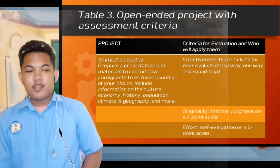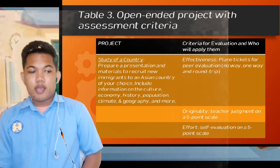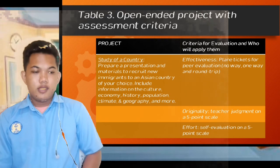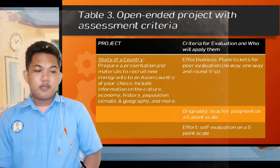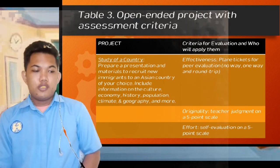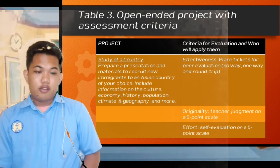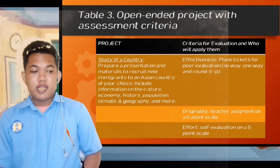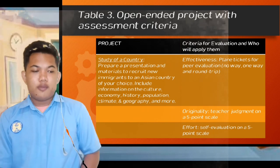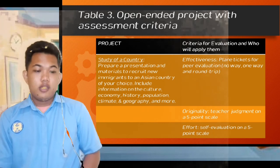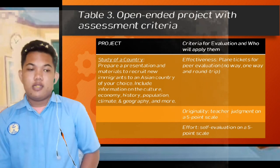Under the criteria for evaluation and who will apply them: effectiveness — using tickets for peer evaluation, scored as no way, one way, or round trip. The next is originality, judged by the teacher on a five-point scale. And lastly, effort — self-evaluation on a five-point scale.